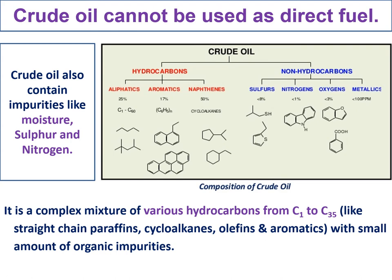Such an important crude oil cannot be used as a direct fuel in our engines. Why? Because crude oil may contain impurities like moisture, sulfur, and nitrogen. If moisture is present, crude oil will produce a low calorific value of heat when burned. If samples contain sulfur and nitrogen in high amounts, they produce toxic gases during combustion. That is why we are not advised to use that type of material as fuel.